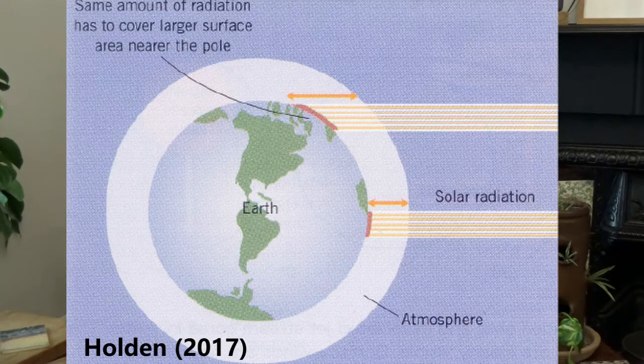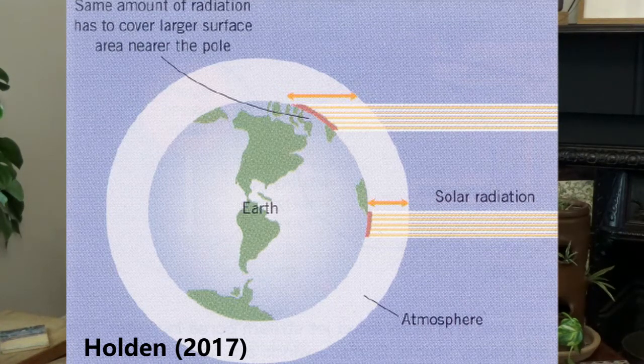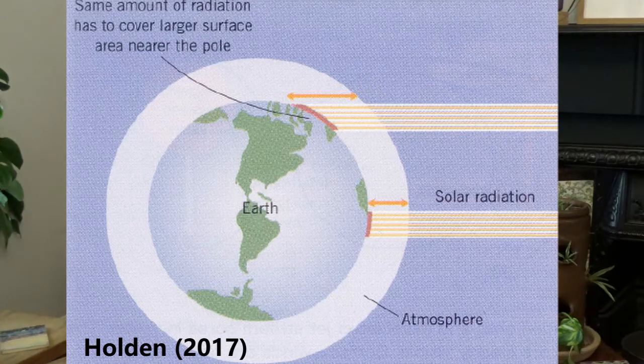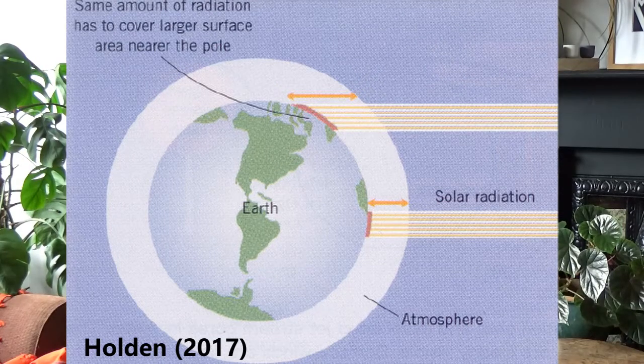Those temperature differences between the equator and high latitudes drive atmospheric circulation, effectively moving warm air from the equator toward the poles and cold air from the poles back toward the equator. At the equator, maximum solar heating warms the air, which expands, becomes less dense, and rises — just like a hot air balloon. As the air rises, it cools and any water vapor condenses into clouds, producing intense rainfall. That's why around the equator you get very warm, wet climates and tropical rainforests.